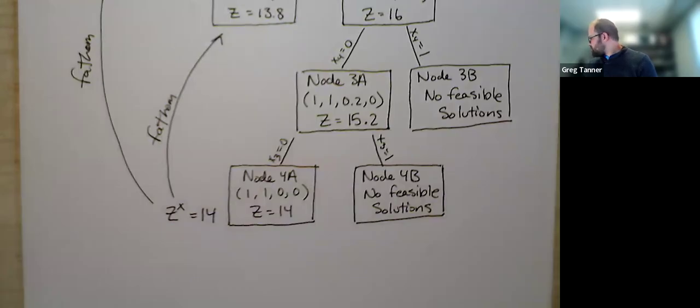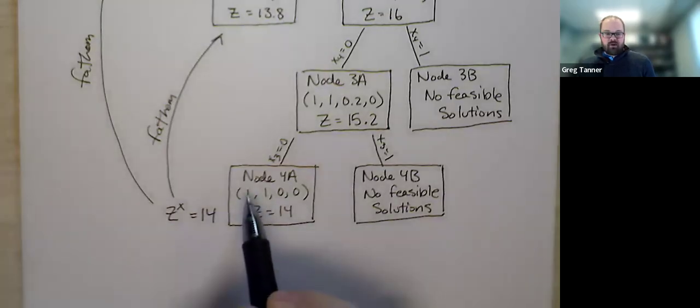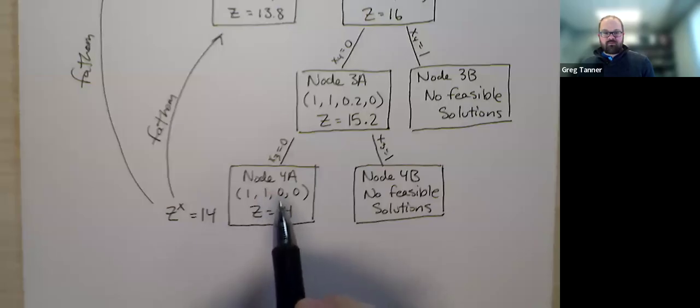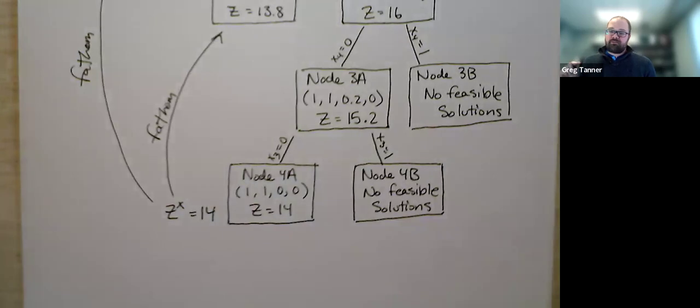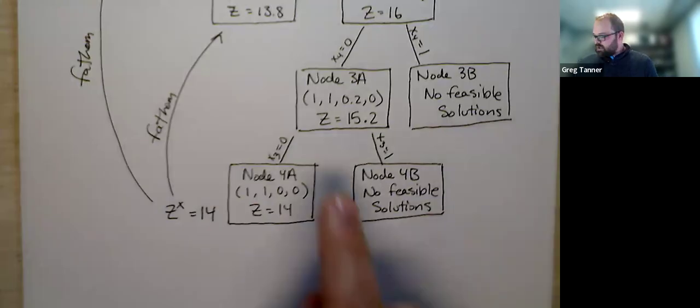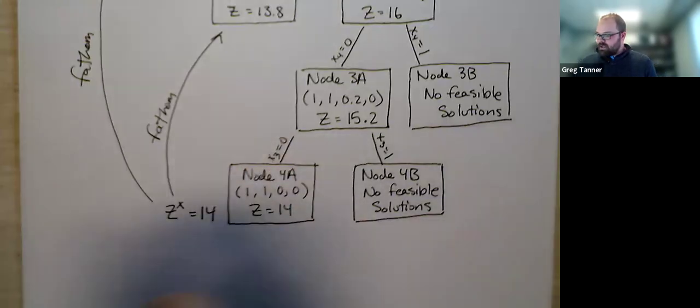And if we think about what is that in terms of the original variables, x1 was build a factory in Fargo. x2 was build a factory in Sioux Falls and then warehouses in Fargo and Sioux Falls. And so the optimal solution is to build factories in both Fargo and Sioux Falls, but not to build any warehouses. I assume then just purchasing warehouse space from somebody else instead. And so that is the optimal solution in this case.